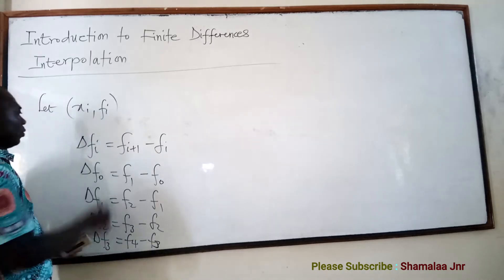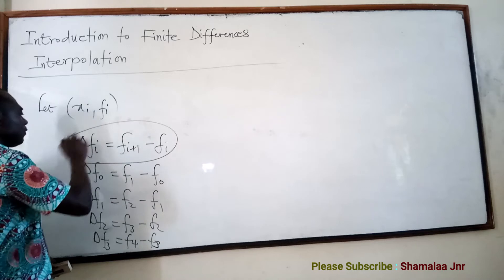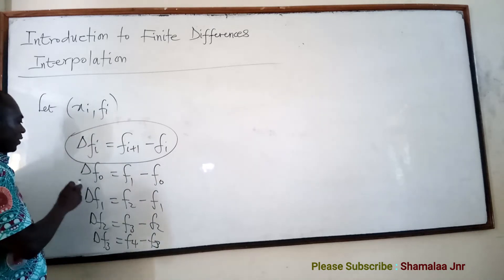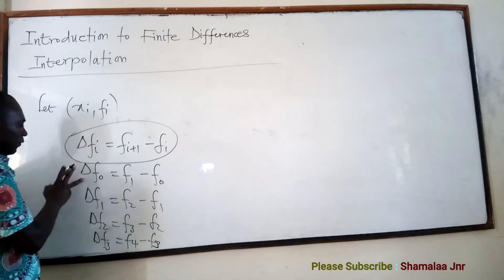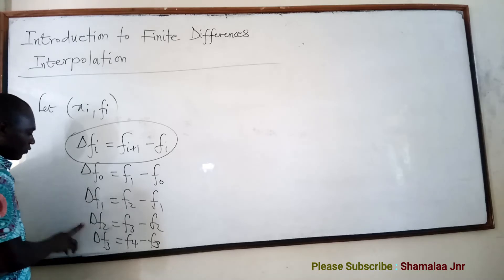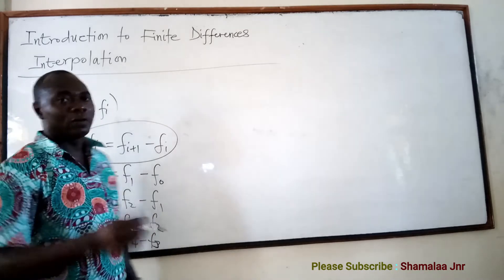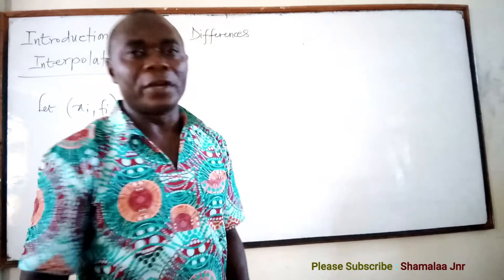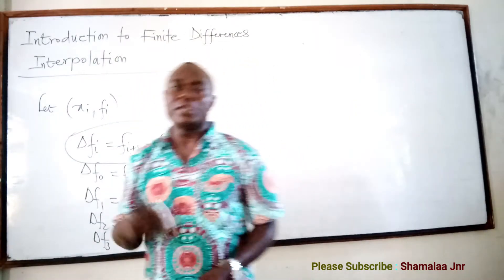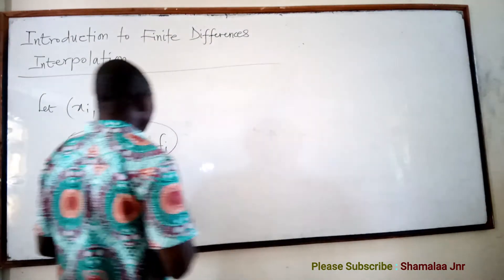First forward difference is defined by that formula. Delta F0, delta F1, delta F2, and delta F3 are called first forward differences.